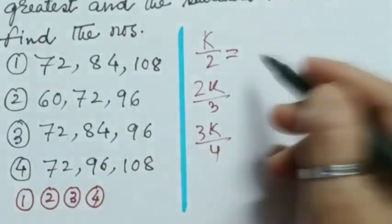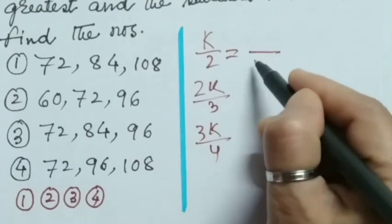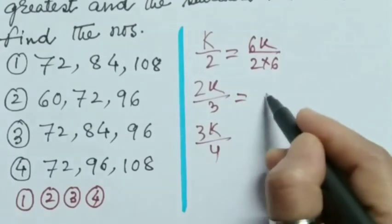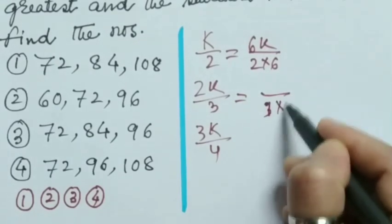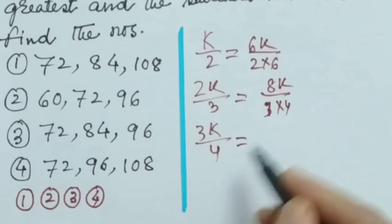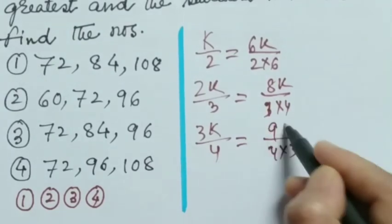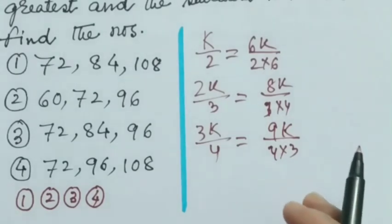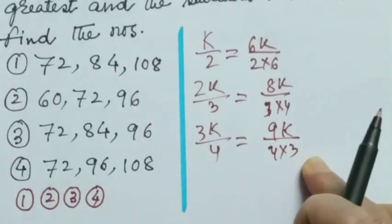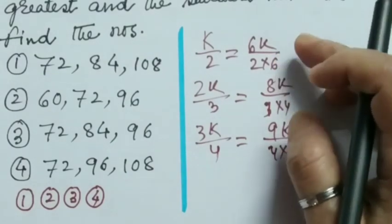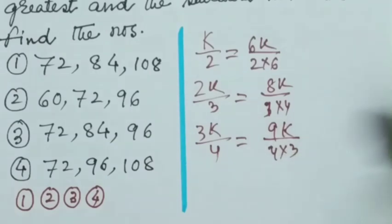So I am converting them into equivalent fractions with denominator 12. That means 2 into 6, it will be 6k by 12. And this one will be 3 into 4, that means 8k by 12. And this one will be 4 into 3, that means 9k by 12. Here you see, this one is the greatest one. And this one is the smallest one. So now, what to find out? Exactly. Difference between these two numbers is given, greatest and smallest. Here 9k minus 6k means 3k.